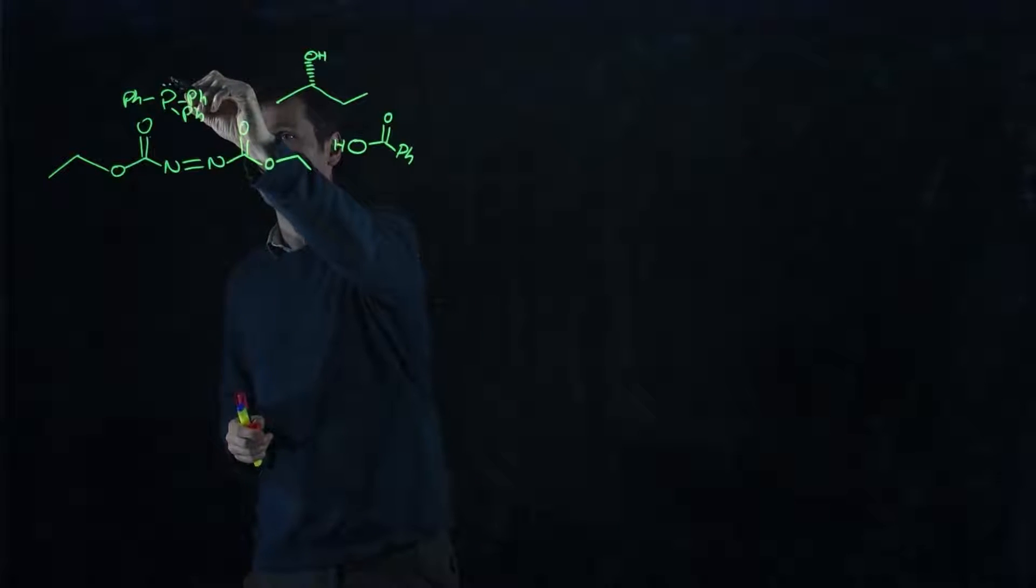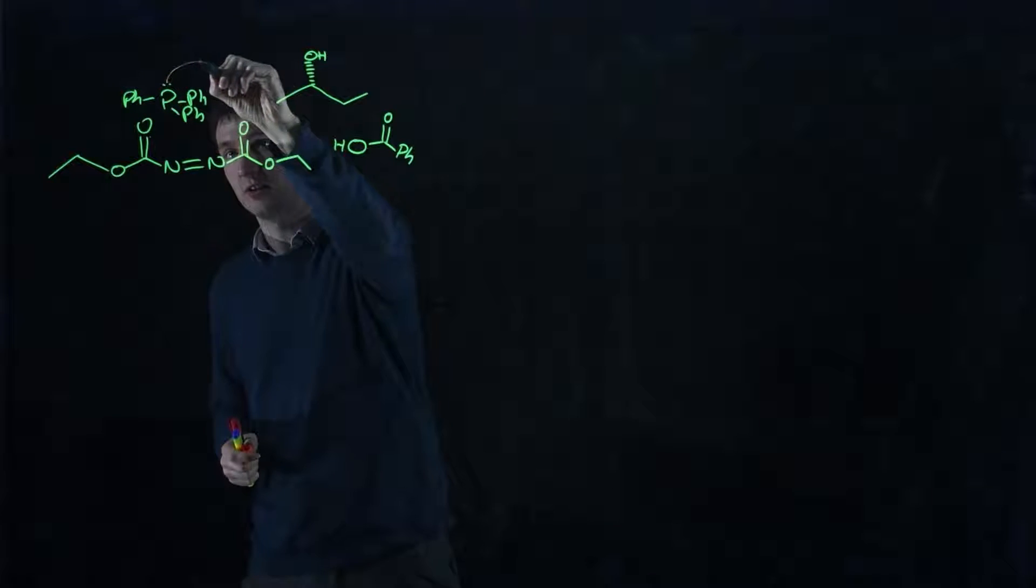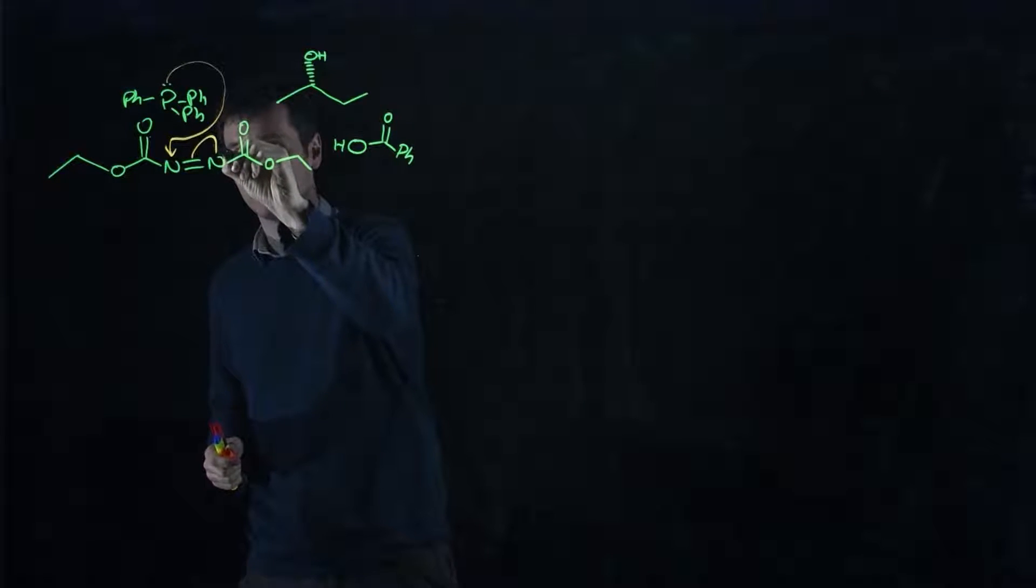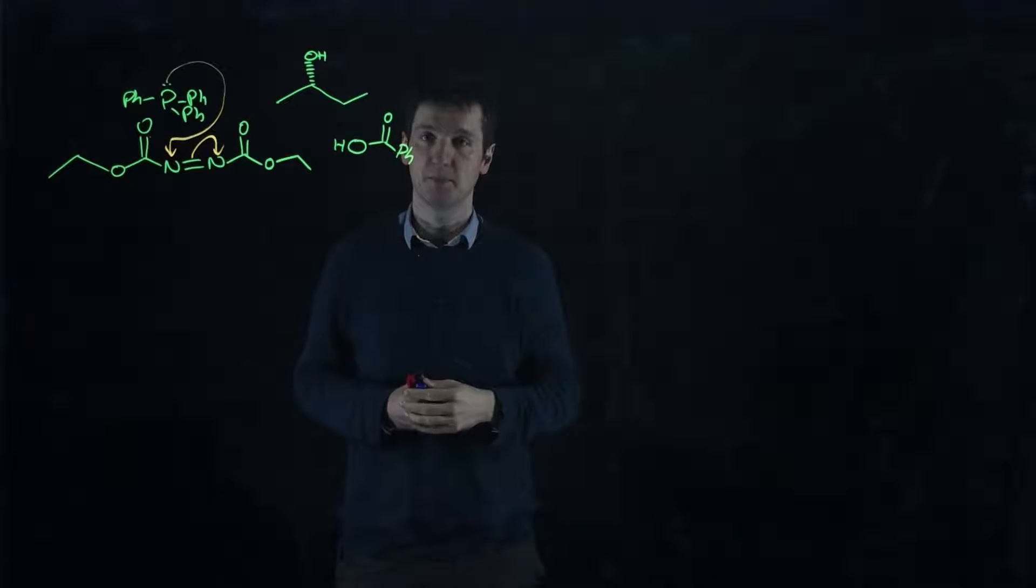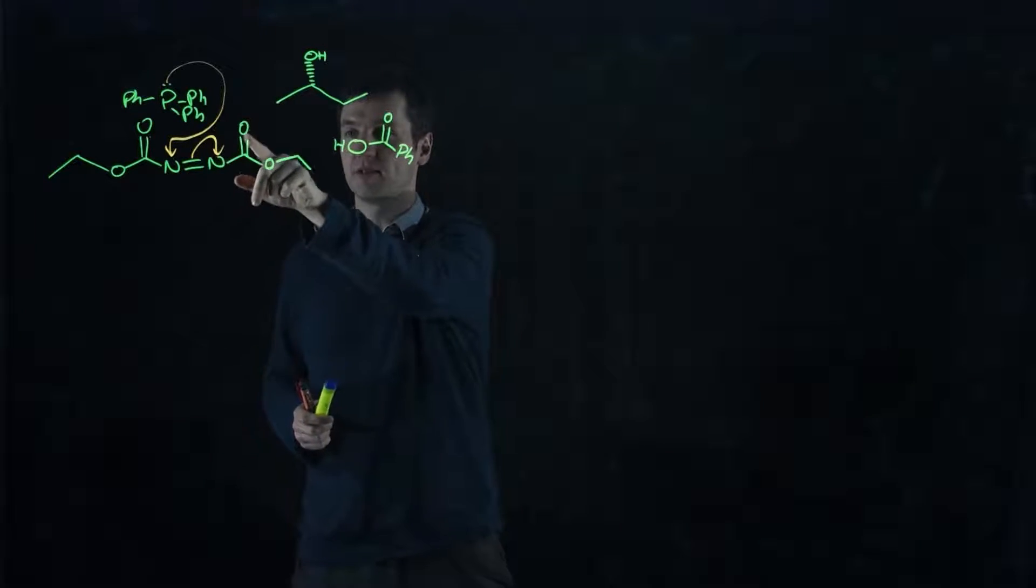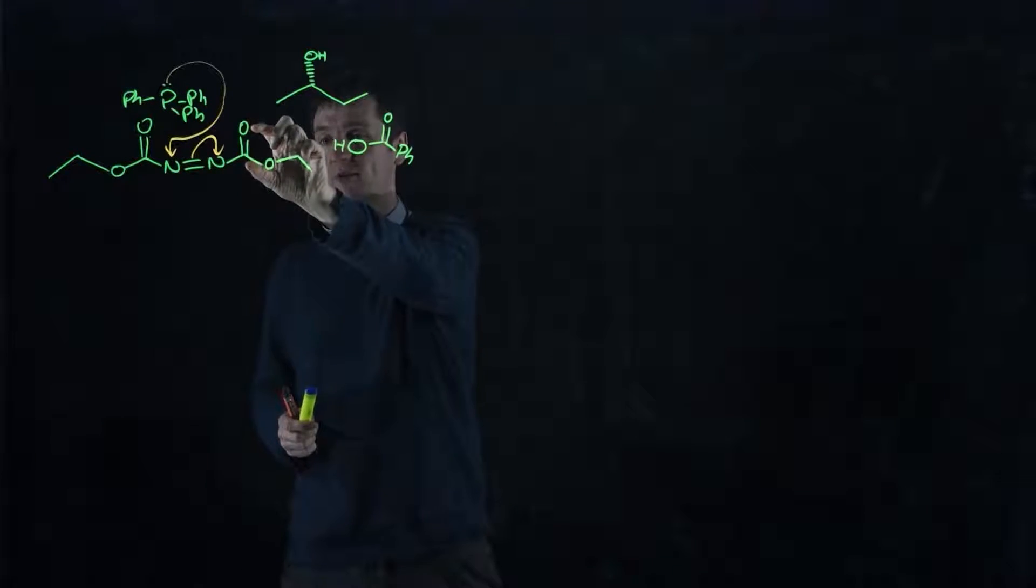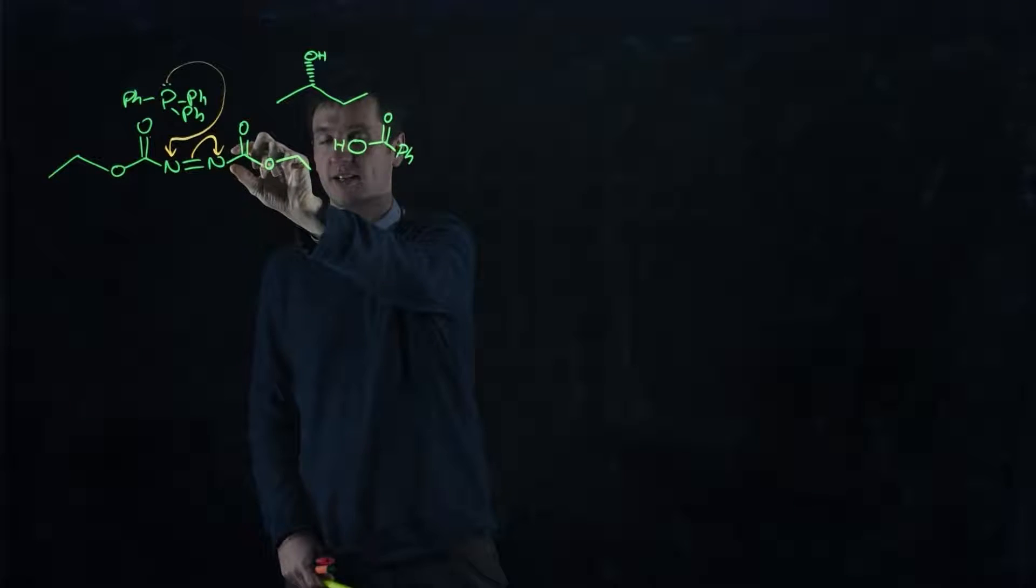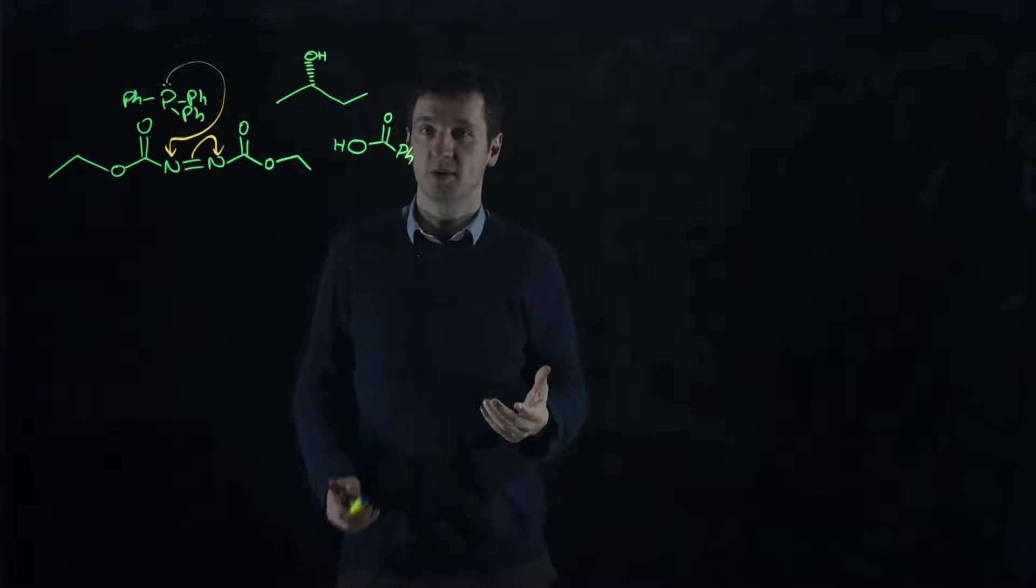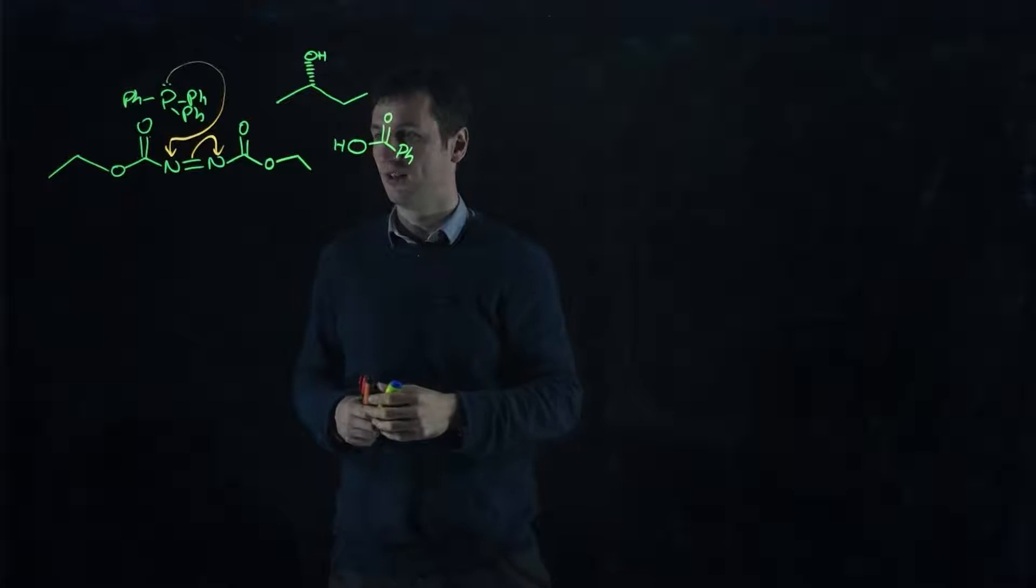This whole reaction starts without ever involving the alcohol or the acid. The first thing that happens is that triphenylphosphine acts as a nucleophile and attacks this nitrogen-nitrogen double bond, so forming a new nitrogen-phosphorus bond with that pair of electrons and breaking the nitrogen-nitrogen double bond, putting the negative charge onto the nitrogen. It's next to a carbonyl, so it can resonate up onto the carbonyl. But because it's a nitrogen, the distribution between the enolate form and the negative charge on the nitrogen is much less towards the enolate form, so it's fine to just draw it with the negative charge on the nitrogen.